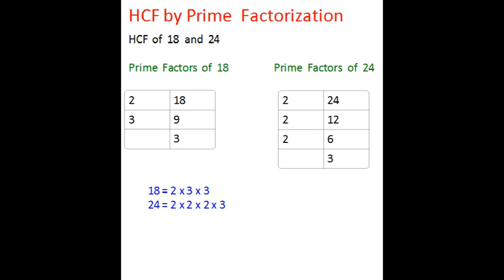The prime factors for 18 are 2, 3 and 3. And for 24 are 2, 2, 2 and 3.